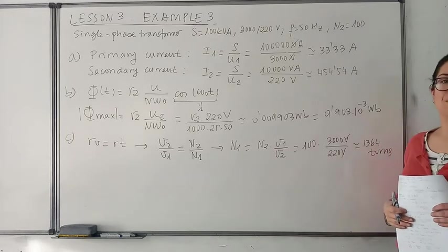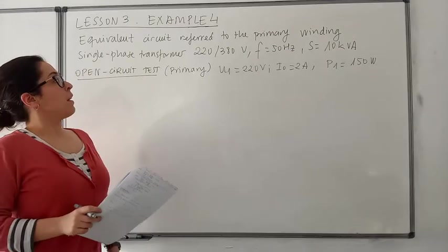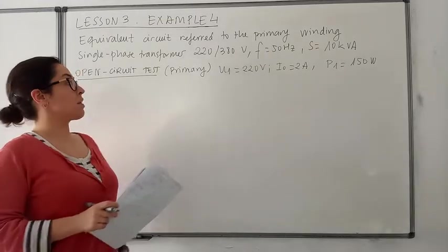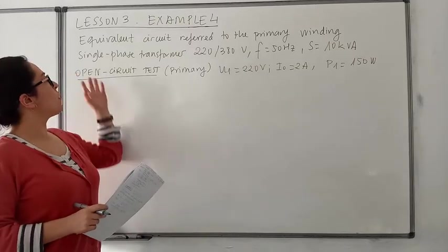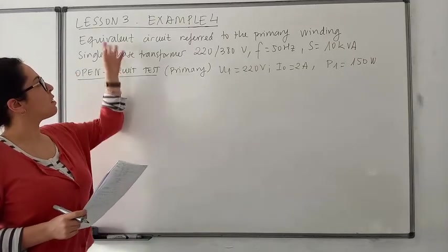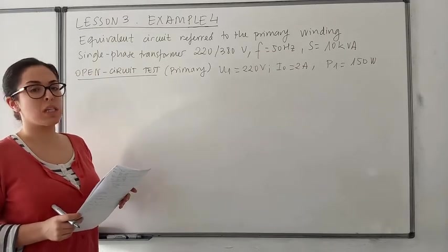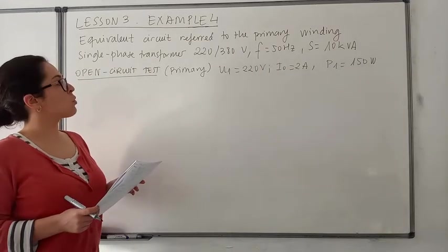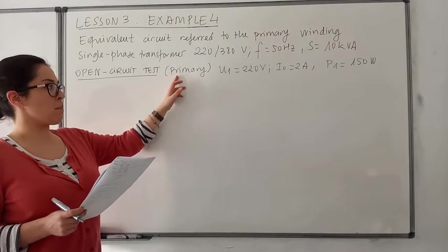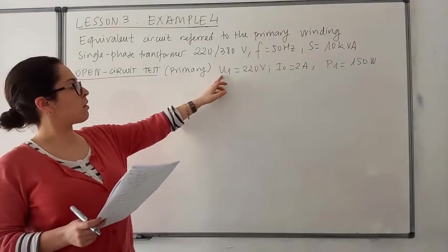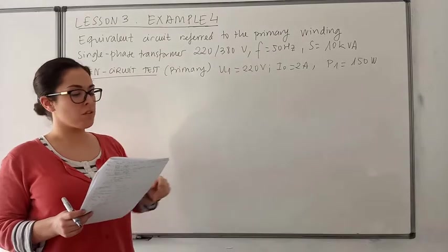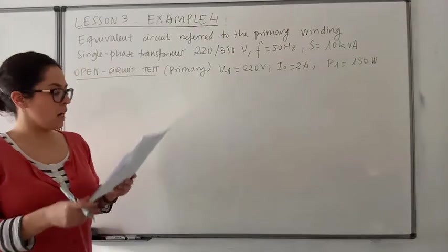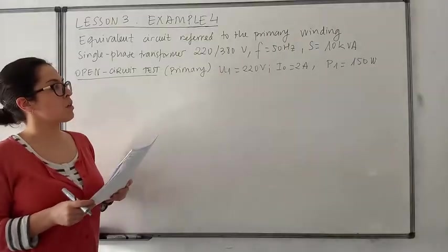Here we are solving example 4 from lesson 3, which is magnetic circuits and electrical machines. We need to obtain the equivalent circuit referred to the primary winding. First we have the results of the open circuit test which was carried out in the primary circuit. We have the rated voltage of the primary 220 V, the no-load current which is 2 amps, and the power of the iron losses which is 150 W.